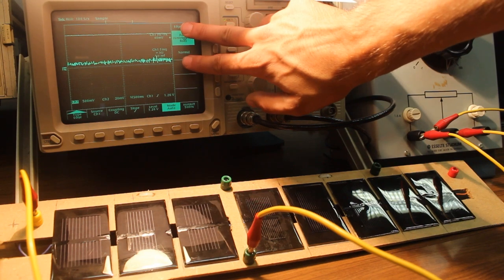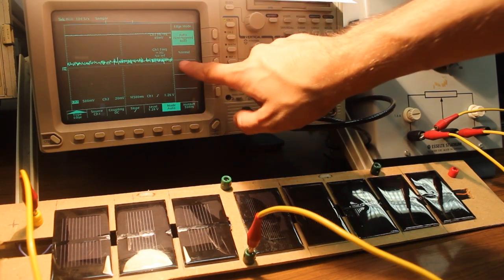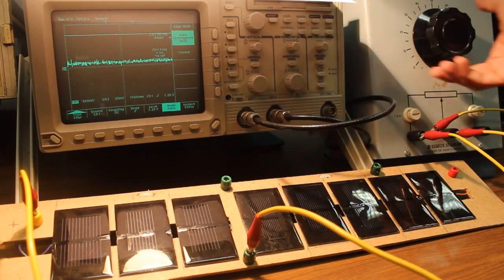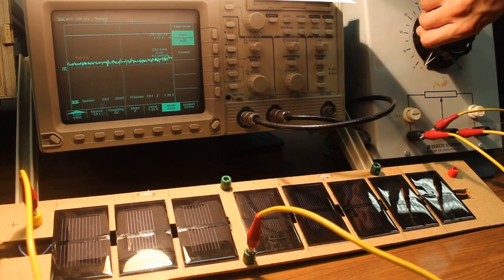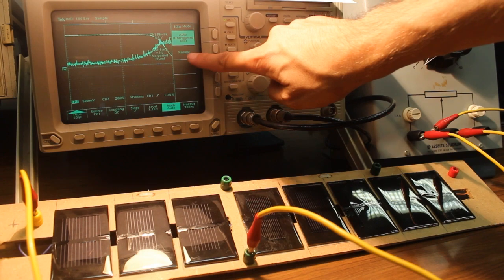You can see here the evolution in time of the voltage and current of the solar cells. Start the experiment by changing the resistance value to zero and see what is happening to the voltage and current.